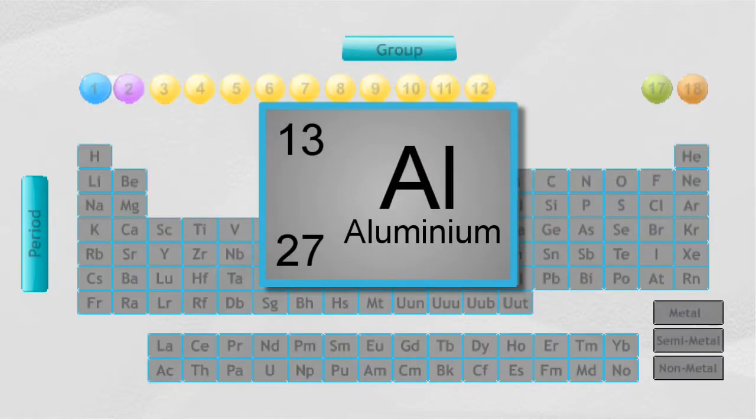Each block in the periodic table represents a different element, each element different than the others based on the number of protons and electrons. This is the number that is shown in the upper part of each block.